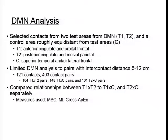For our default mode network analysis, we selected contacts from two test areas within the default mode network, designated T1 and T2, and a control area roughly equidistant from those test areas, designated C. T1 included contacts in anterior cingulate and orbital frontal cortex; T2 was posterior cingulate and mesial parietal; C was superior temporal and/or lateral frontal depending on contact availability in individual patients. We also limited our analysis to pairs with intercontact distance between 5 and 12 centimeters.